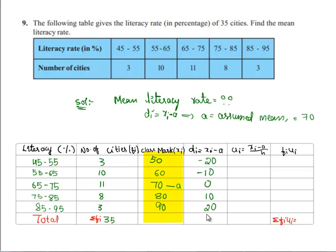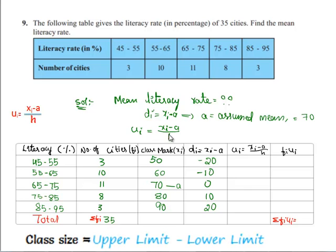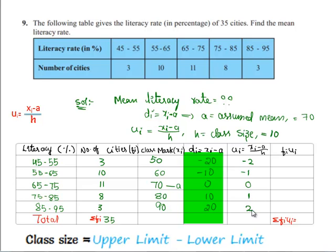We observe the values of deviation here. By dividing it by 10 we get very smaller values for easy calculation. Hence by taking the formula ui is equal to xi minus a, nothing but deviation by h, where h is known as class size. Here we have taken it as 10. Hence by calculating we get minus 20 by 10 is minus 2, minus 1, 0, 1 and 2.